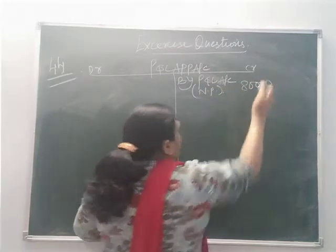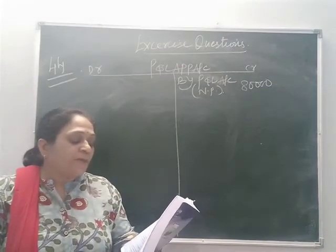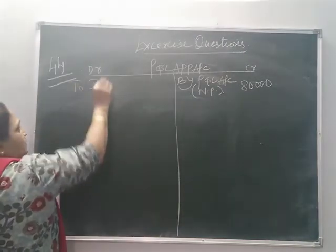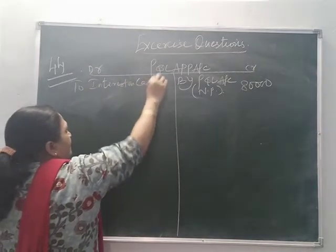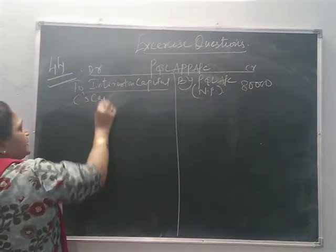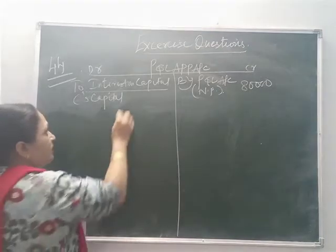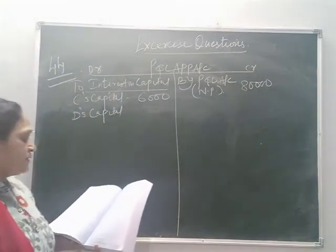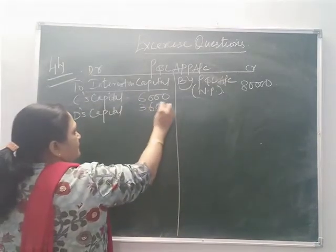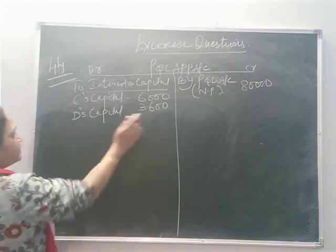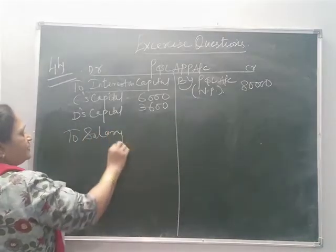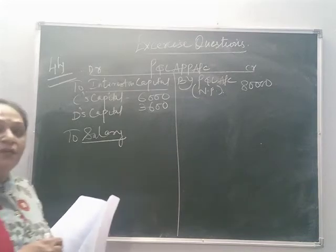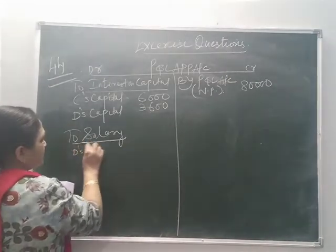Capitals are 1 lakh and 60,000. Interest is provided at 6% per annum. So interest on capital for C: 6% of 1 lakh = 6,000. For D: 6% of 60,000 = 3,600. Next we have to provide salary. Salary is to be provided to D only. D is entitled to a salary of 3,000 per month, so 3,000 into 12.